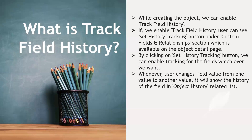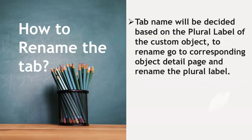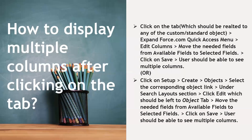How do you rename a tab? While creating or after creating the object, we can create a tab. The tab name is decided based on the plural label of the custom object. For example, if the object is Doctor, the plural label should be Doctors; if it is Patient, it should be Patients. To rename the tab, we rename the plural label of the custom object.